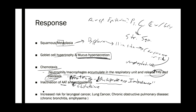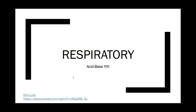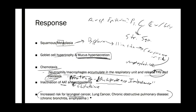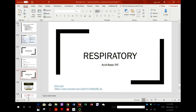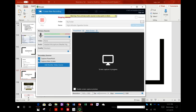To summarize the most common things caused by cigarette smoke: laryngeal cancer — smoking is the most common cause of laryngeal cancer, and the larynx is part of the conducting zone. It's also the most common cause of lung cancer. And COPD, which encompasses both chronic bronchitis and emphysema. That's a decent summation of cigarette smoke effects. The only thing left after this is acid-base.